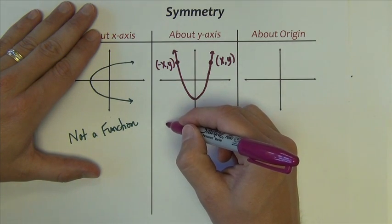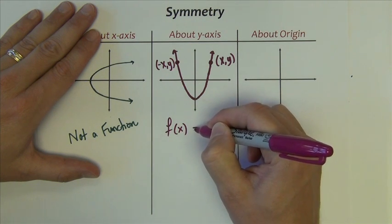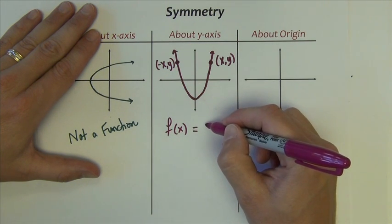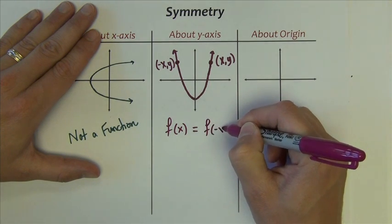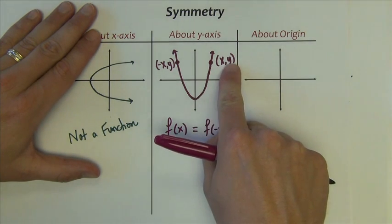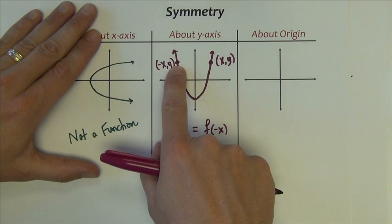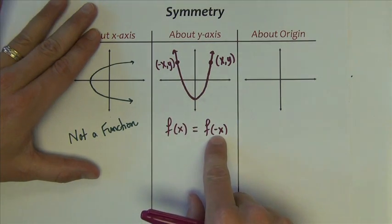the point negative xy is also on the graph. In other words, f(x) is equal to f(-x). In other words, the y value at x is the same as the y value at negative x.